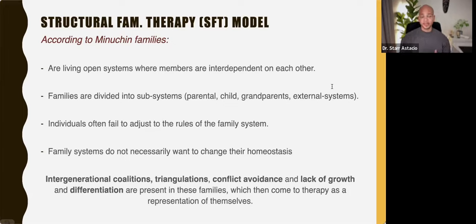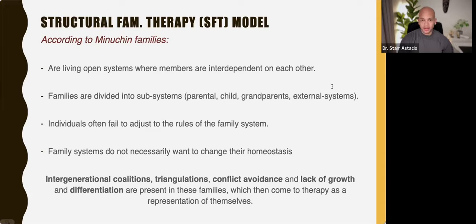Think about general systems theory — we're all part of something, we're all part of a system. That's what Minuchin is saying: the family is a living open system, and each person is interdependent within it. Family process is regulated by a multi-level interplay of homeostasis and change. Sometimes families fail to adjust their rules in response to external or internal influences that exist within their system.